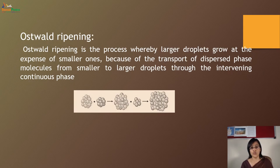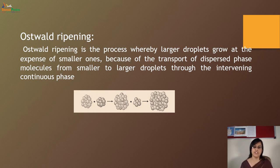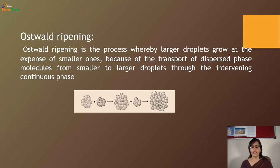Ostwald ripening: as you can see in the figure, this is the process whereby larger droplets grow at the expense of smaller ones, because of the transport of dispersed phase molecules from smaller to larger droplets throughout the intervening continuous phase. In other words, at the expense of small droplets, there is formation of larger droplets — this is called Ostwald ripening.